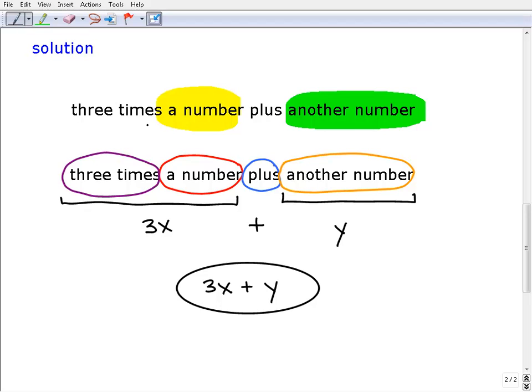So anytime you see a phrase like that, what we're talking about is a variable. So any number, so three times a number. So what number are we talking about? Well, I don't know exactly, so we need a placeholder for it. In algebra, that's a variable. So just select one. I'm going to go ahead and select x, for example.